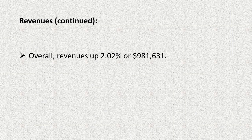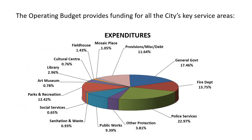Going to our expenditures, the city has a number of key service areas. Some of our major areas include general government, fire department, police services, and other protection. One area I would highlight is provisions, miscellaneous, and debt. The largest portion of that is provisions to other funds — so we are appropriating tax dollars for other funds. Almost $4 million of our municipal tax levy goes to either the waterworks or the capital expenditure funds, making it a major contribution to those funds.